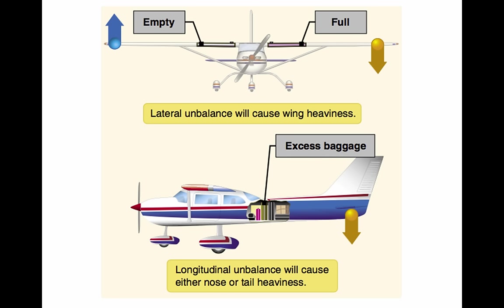A single pilot operating a small rotorcraft may require additional weight to keep the aircraft laterally balanced. Flying an aircraft that is out of balance can produce increased pilot fatigue with obvious effects on safety and efficiency. The pilot's natural correction for longitudinal unbalance is a change of trim to remove the excess control pressure. Excessive trim, however, reduces not only aerodynamic efficiency, but also primary control travel distance in the direction the trim is applied. Adverse balance conditions affect flight characteristics in much the same manner as those mentioned for an excess weight condition.